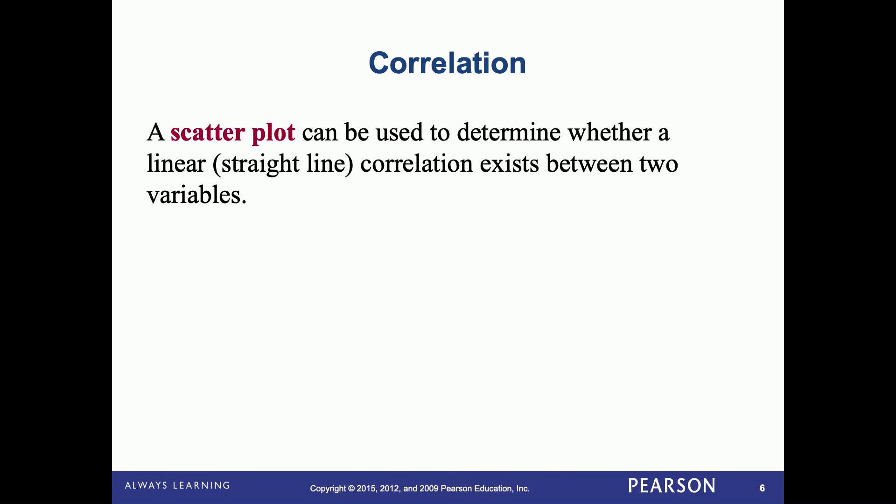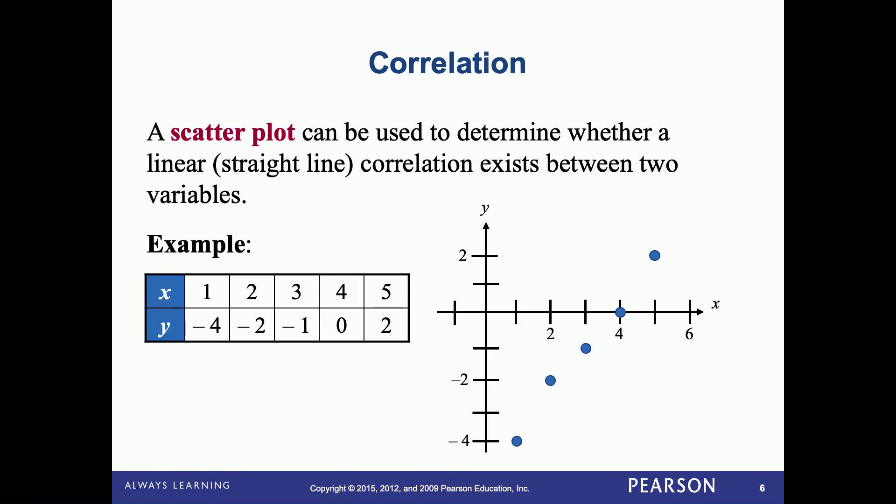A scatter plot can be used to determine whether a linear or straight line correlation exists between two variables. So here is a plot of the x values: 1, 2, 3, 4, 5, and the y values: -4, -2, -1, 0, and 2. Notice the blue dots on the graph are pretty close to forming a straight line.